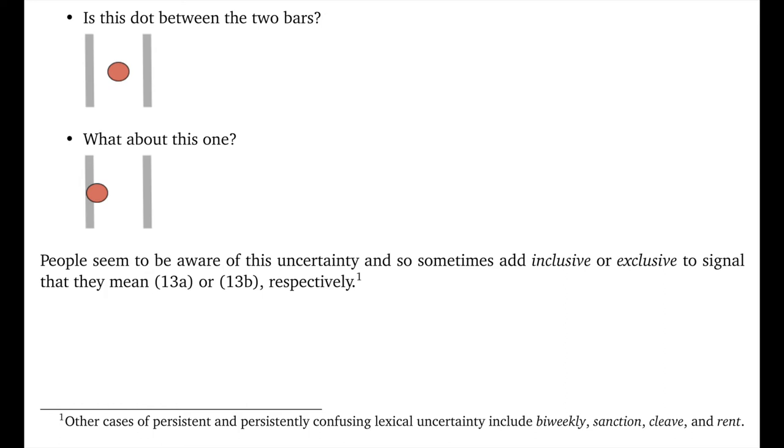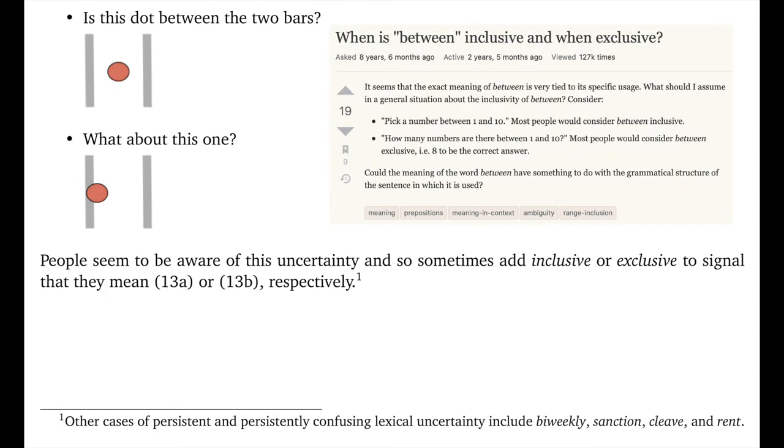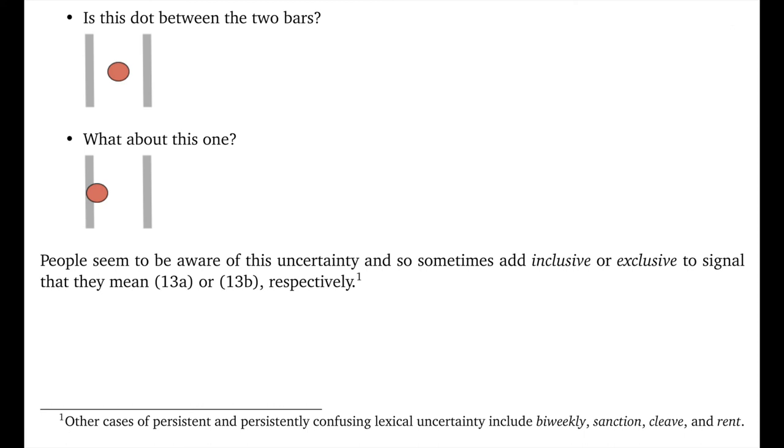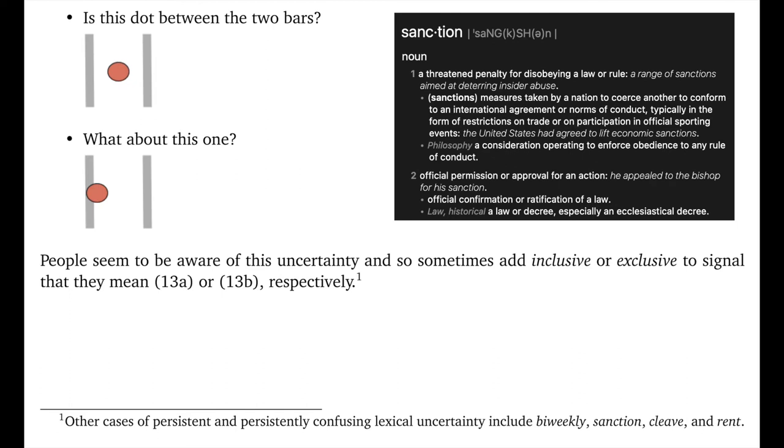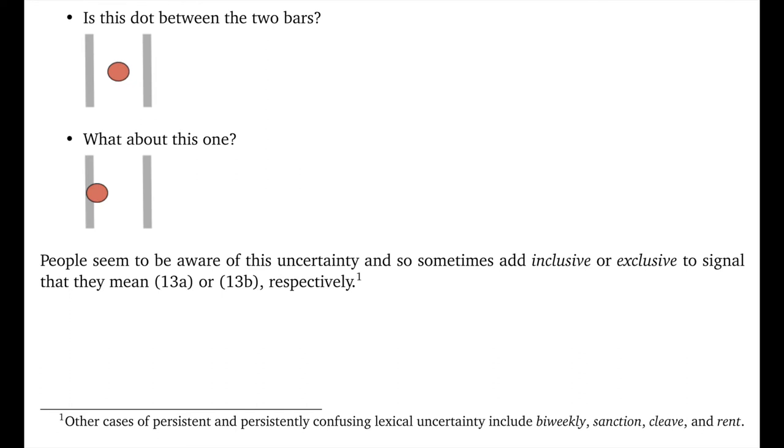My point in all this is that there may not be a fact of the matter concerning the truth conditions for these phrases. And I think people are aware of that at some level. Where it matters, you often see people actually tacking on the word inclusive or exclusive to clarify their intention somewhat. Now, this is by no means unique to the template between X and Y as a sort of lexical determiner. As I said above, I think lexical uncertainty is pervasive in natural languages. I gave a few more examples in this footnote, and I'm sure you can think of others. And these things can be persistent and persistently confusing. It's noteworthy, though, I think, that it affects even quantificational determiners, which seem like they offer at least the potential for real precision.